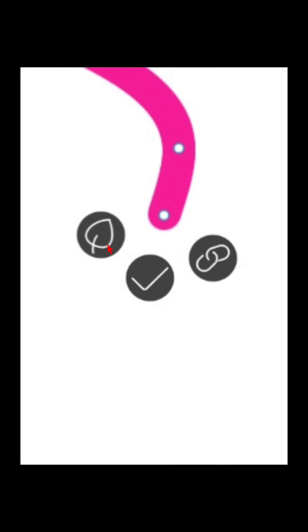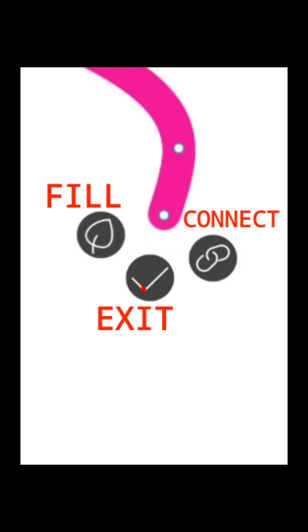When you draw something, you get three icons: a tick, a leaf option, and a chain-like icon. These three icons appear in the curve tool. When you click the tick, you can move the anchor points as you wish, and when you finally click the tick the shape will appear as it is without any fill or other changes — so the tick is used to exit the curve tool.